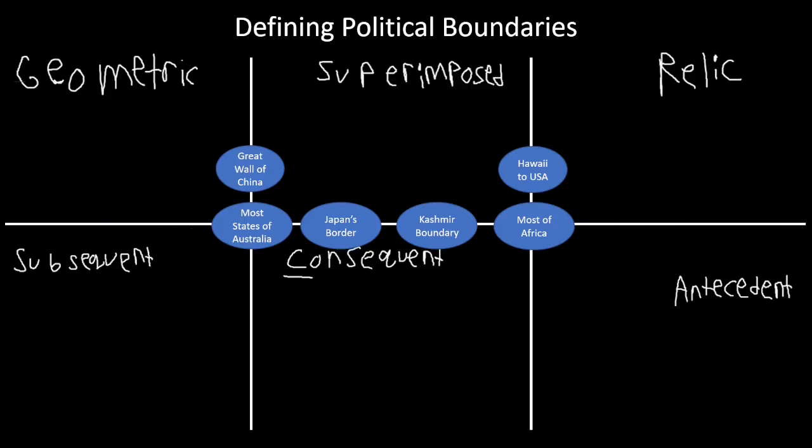Now we have six examples to match to the boundary types. The Great Wall of China is a boundary no longer with a function — it was built to protect China, it's still there but has no function. That makes it a relic boundary. Next, most states of Australia — if you look at a map you'll see a lot of straight lines making the states of Australia primarily geometric boundaries.